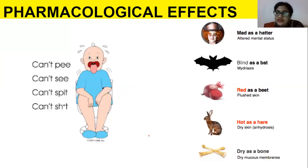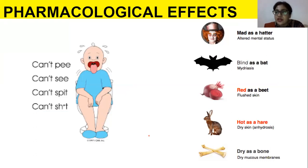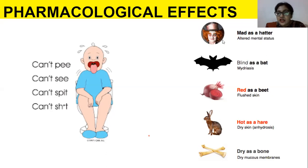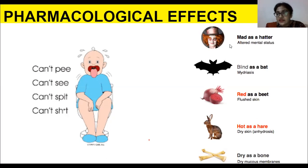For pharmacological effects, there are two useful mnemonics. The first involves a baby saying it can't pee, can't see, can't spit, and can't pass stool — reflecting the dryness and lack of secretions caused by anti-muscarinic drugs.